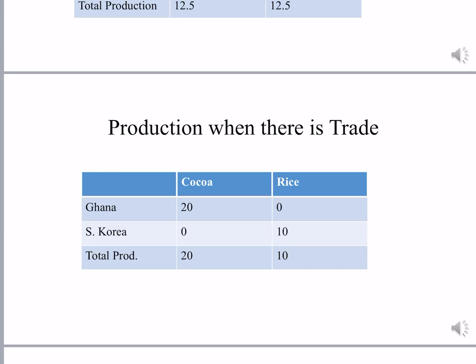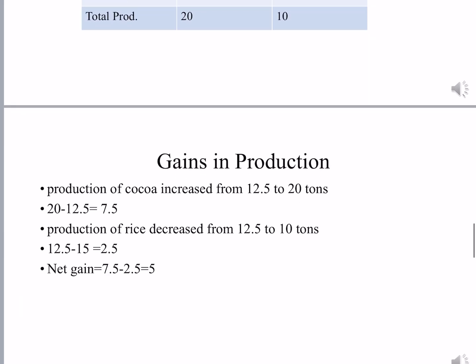The gain in production: for cocoa, it is 20 minus 12.5, which equals 7.5 tons. For rice, we get a negative result because earlier 12.5 units of rice were produced, so it is minus 2.5. The net gain is 7.5 minus 2.5, which equals 5 tons.